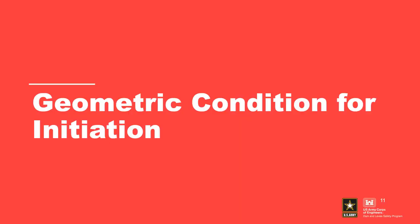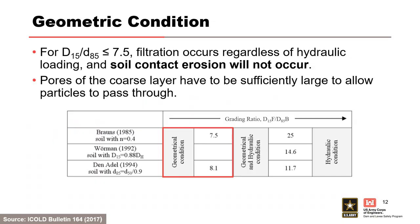The geometric condition is assessed by comparing the D15 of the filter, or coarse material, to the D85 of the base, or fine material. If the ratio of D15 of the filter to D85 of the base is less than or equal to 7.5, soil contact erosion is unlikely to occur. If the ratio is greater than 7.5, the hydraulic condition must also be assessed.